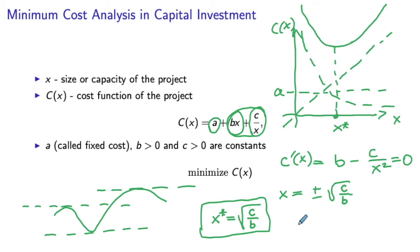In our case, c double prime of x is going to be equal to 2c over x cubed. And whenever x is greater than 0, the derivative is going to be greater than 0.